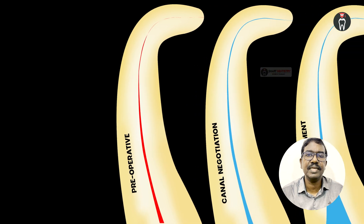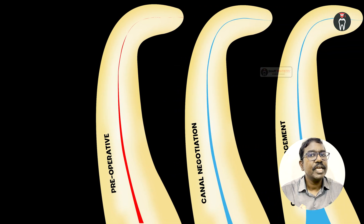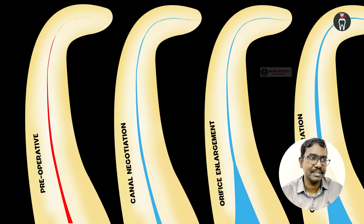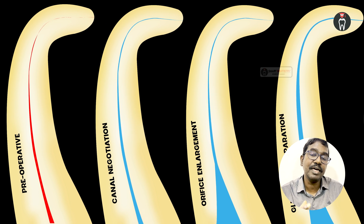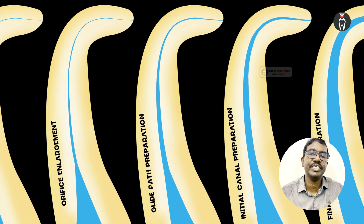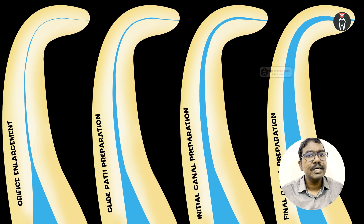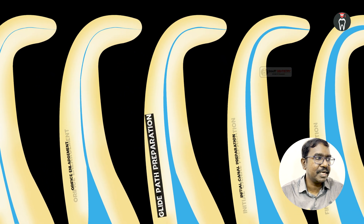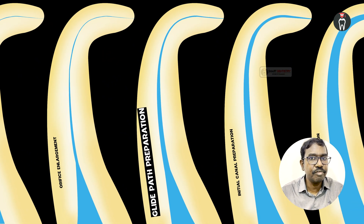After access cavity preparation and locating the root canal orifice, the first step is to negotiate the root canal. Once after canal negotiation, it is always a good practice to enlarge the root canal orifice so that further cleaning, shaping, and all procedures become very easy and procedural errors are minimized. After establishing the orifice enlargement, we have to create a glide path, and after creating a glide path we can proceed with initial and final canal preparation.